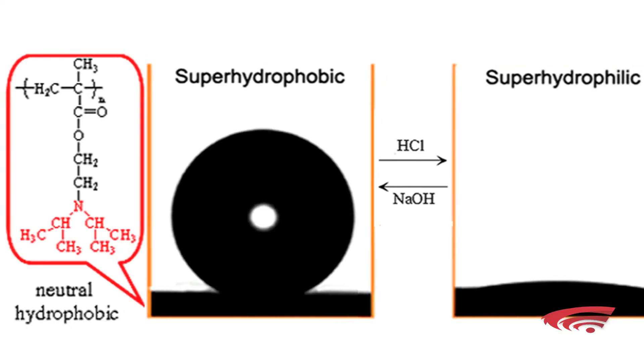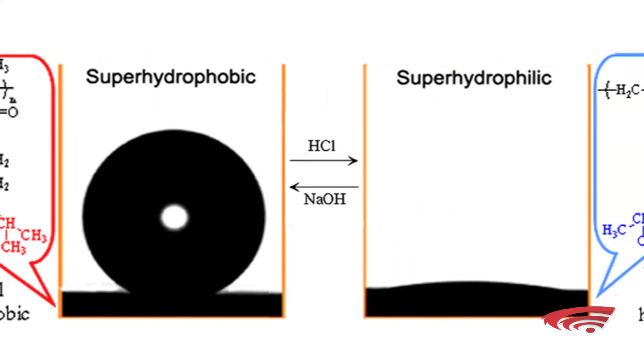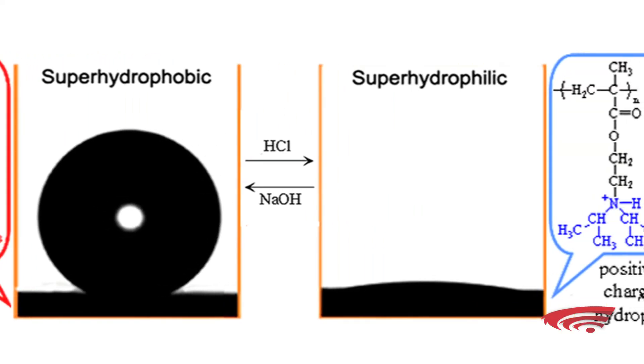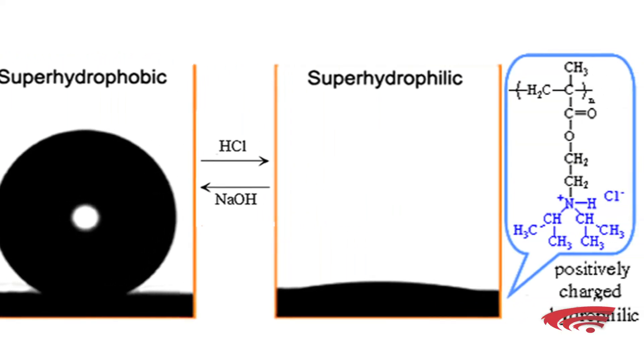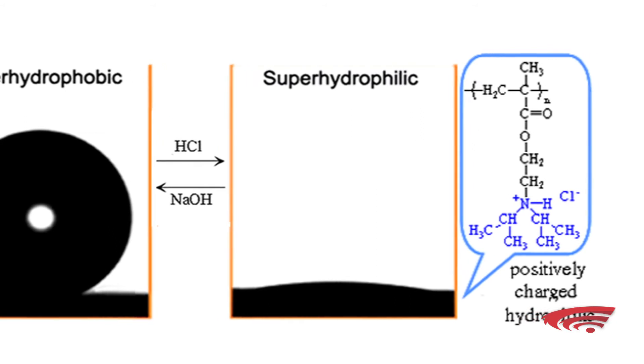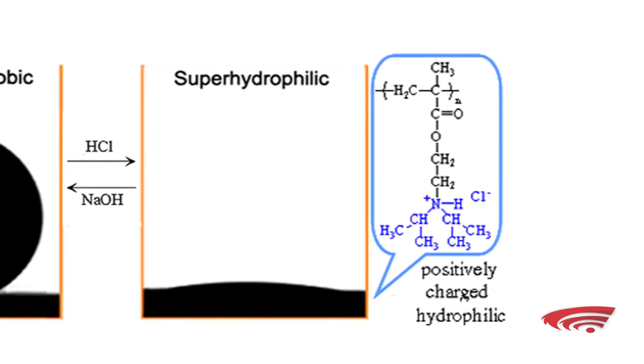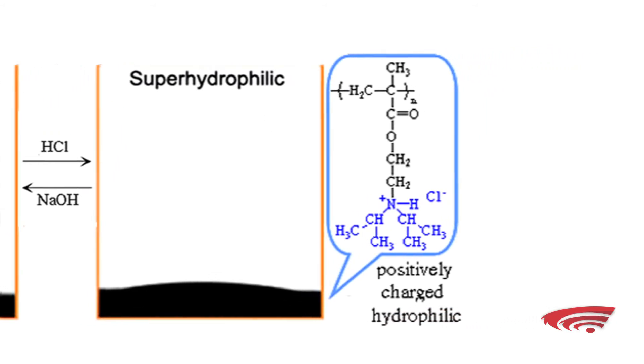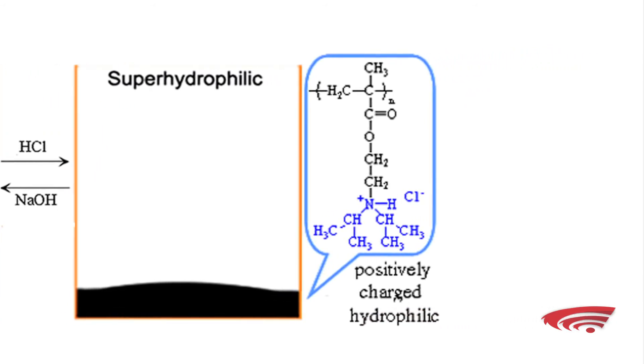The combination of these two different types, which we call the hierarchical range, is the one that increases the change of the hydrophilic properties that I described previously, so that we can go to a surface from the super-hydrophobic properties to the super-hydrophilic properties.